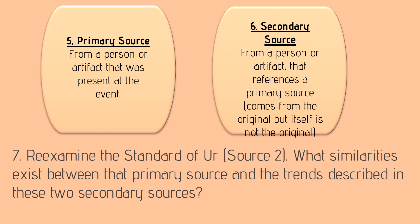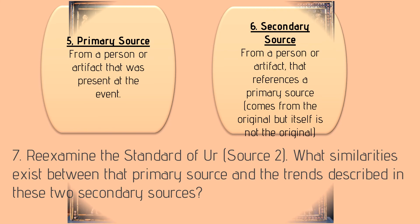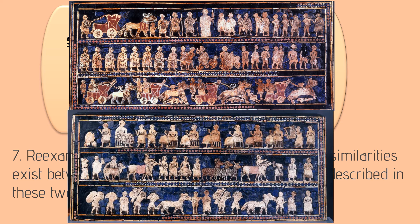I want you to re-examine the Standard of Ur, which is Source 2 from yesterday — those War and Peace panels. What similarities exist between that primary source, those mosaics, and the trends described in the two secondary sources we looked at today? This is a pre-AP level task. I'm going to put the Standard of Ur up on screen — here are your War and Peace panels. What similarities exist between these panels and what you looked at today from Eaton and Perkin?